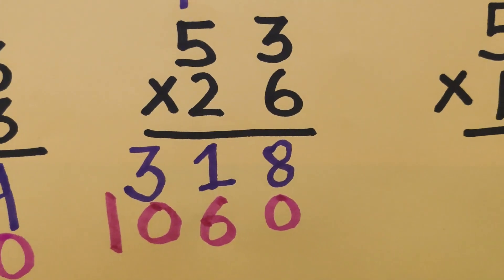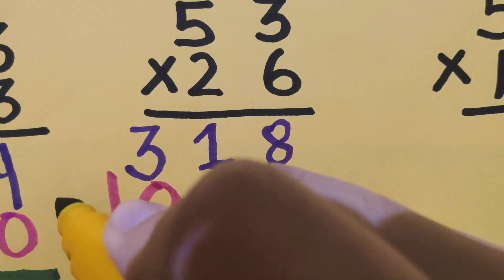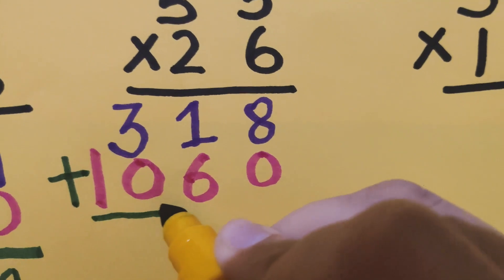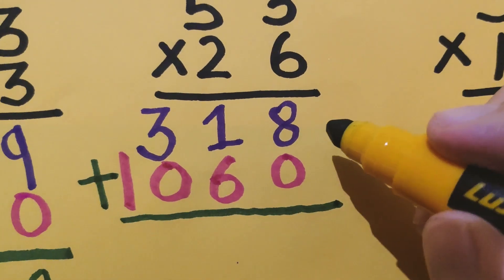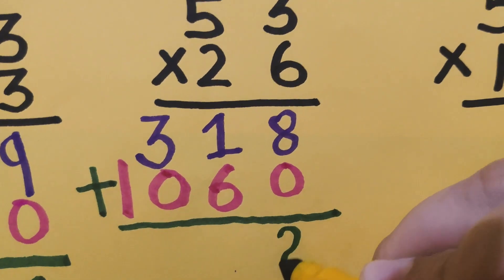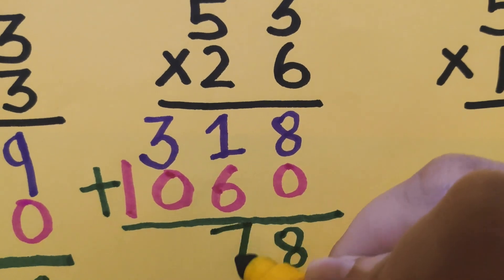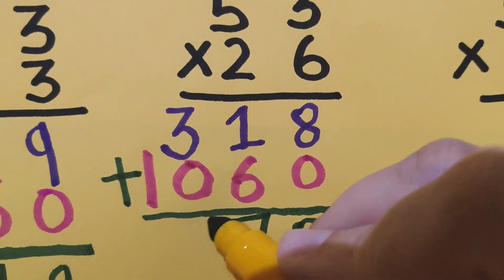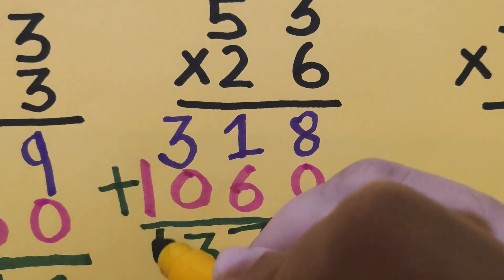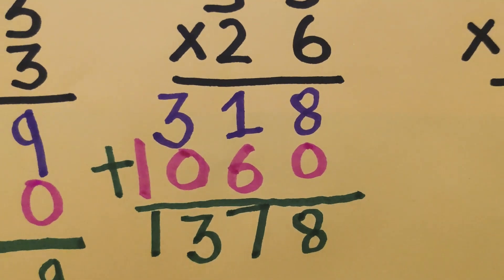Now the last step, A — A means adding. Let's add these two numbers. 8 plus 0 is 8, 1 plus 3 plus 6 is 7 (with carry), 3 plus 0 is 3, and 1 here. So the answer is 1378.